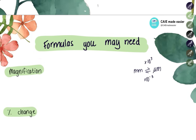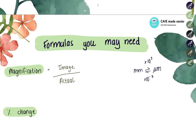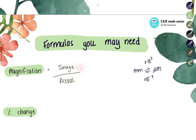The first formula is magnification. Magnification is used when you are looking at microscopic images or cells. The formula for magnification is image size divided by actual size. When using this formula, make sure the units for image size and actual size are the same — for example, if one is in millimeters, the other should also be in millimeters; if one is in micrometers, the same applies.